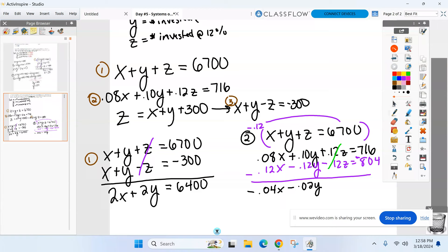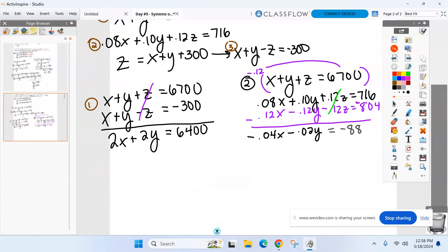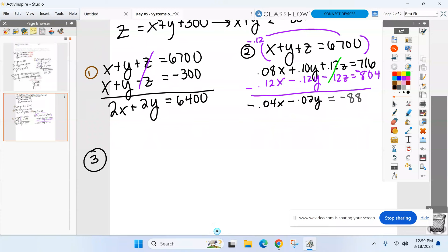So we have negative 0.04X minus 0.02Y. Correct me if I'm wrong. They cancel. Equals negative, oh boy. How far apart are they? 12? 88? Anything here before we move on to the next step? So you take, eliminate a variable. Take two new equations, eliminate a variable. Now, look what I'm left with. Two equations with X and Y now. I know you don't probably like those decimals. 2X plus 2Y equals 6,400. And then this one right here, negative 0.04X minus 0.02Y equals negative 88.